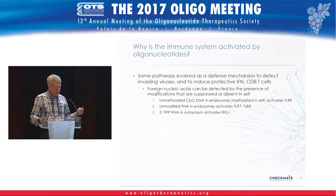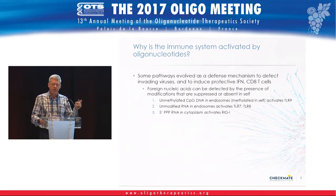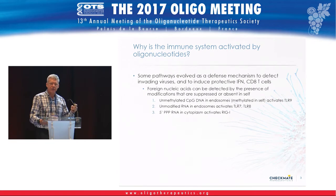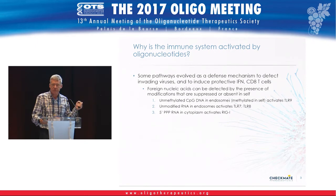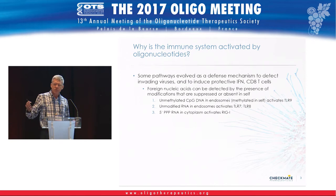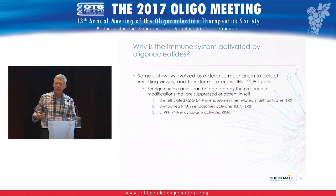Likewise, unmodified RNA in endosomes — as you just heard regarding the importance of N-1 methylation on RNA — is a pretty unambiguous signal that this is a pathogen. Even more unambiguous if there's a 5' triphosphate or 5' diphosphate, which is an indication of a viral RNA. When the immune system detects those signals, those are pretty safe indicators that something is seriously wrong.